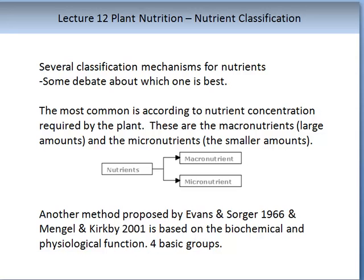The two main groups are the macronutrients and the micronutrients. The macronutrients are nutrients required in large amounts, while the micronutrients are nutrients required in smaller amounts.